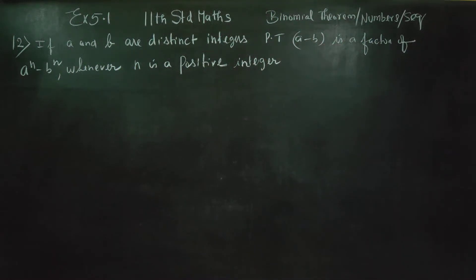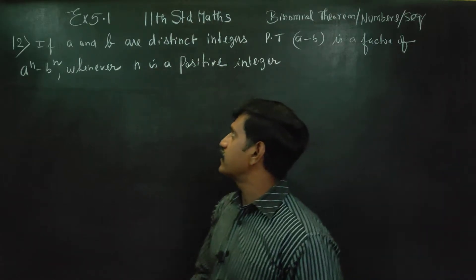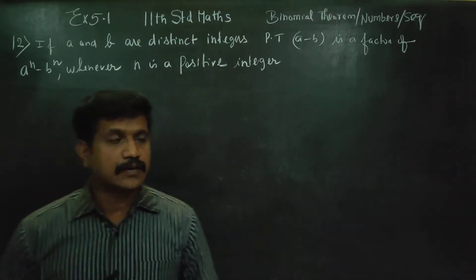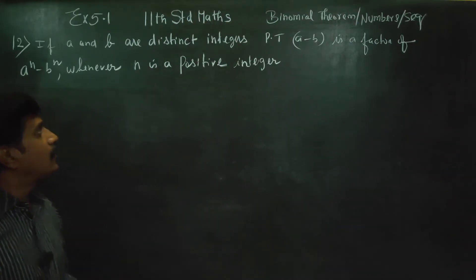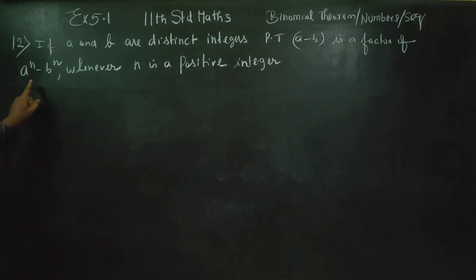Dear Levin Standard students, I am Etroh Karanagaran and in exercise number 5.1, if A and B are two distinct integers, prove that A minus B is a factor of A power N minus B power N.